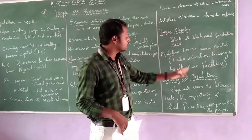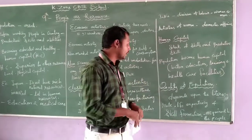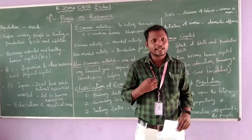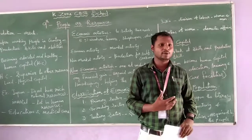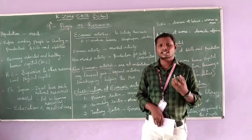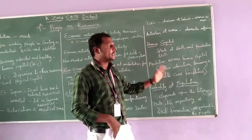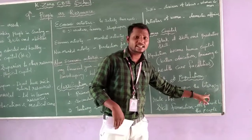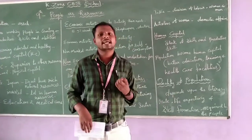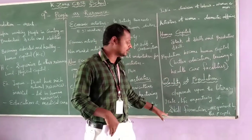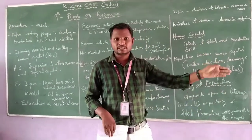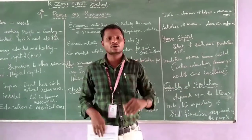As humans we should acquire these three things in our life to help our country. The last topic is quality of population. The quality of population basically depends on three things: literacy rate — whether they are educated or not; life expectancy — how long they expect to live and in what way; and skill formation. When people acquire these three things, they are considered a good quality population.